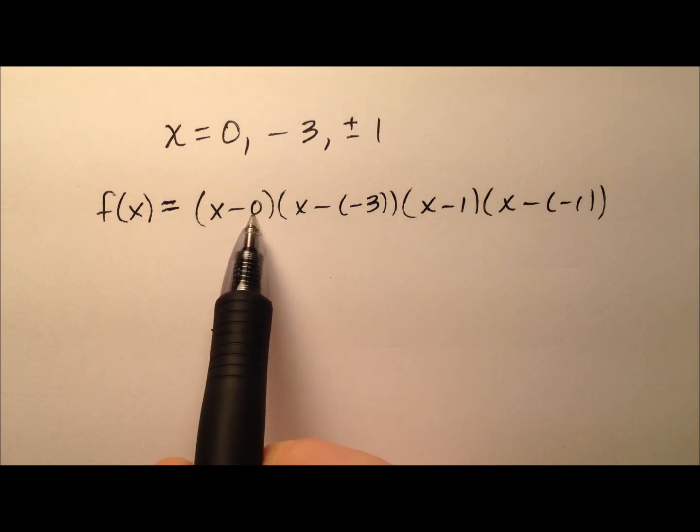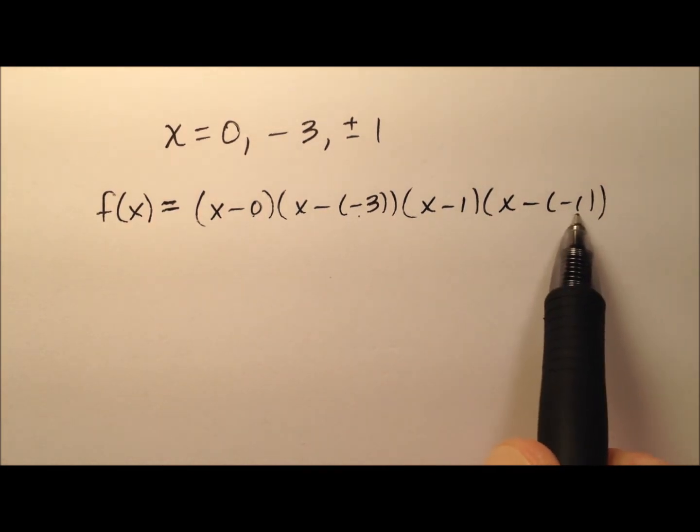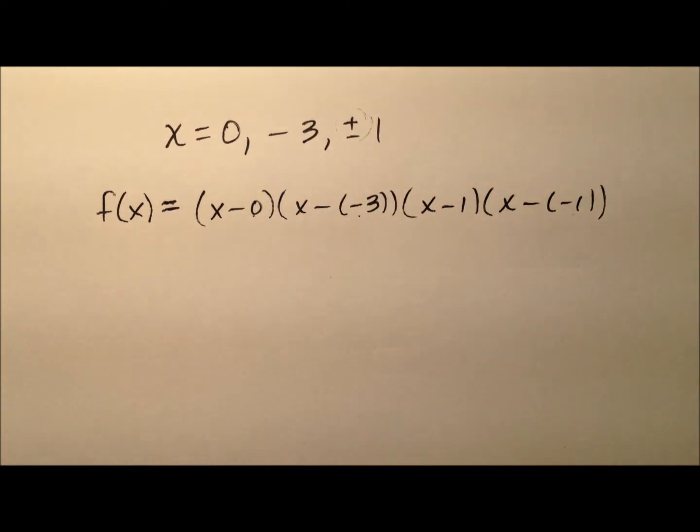given that my roots were 0, negative 3, 1, and negative 1, because we had this plus or minus 1 up here.